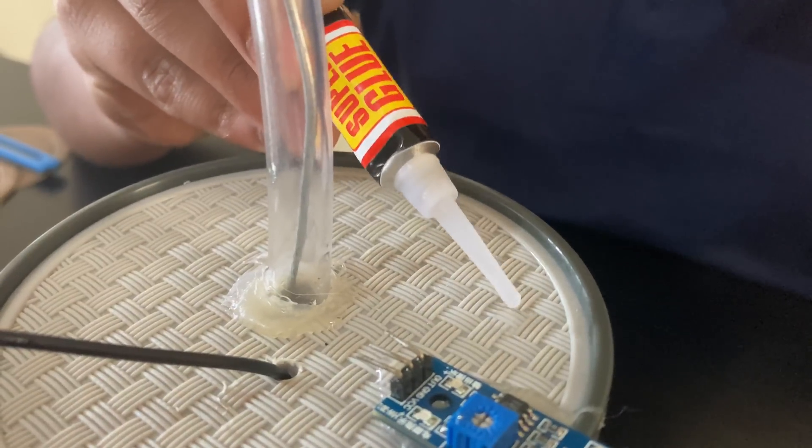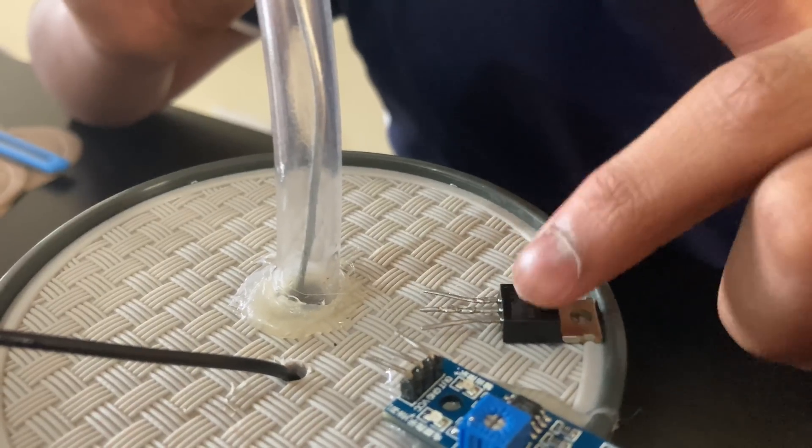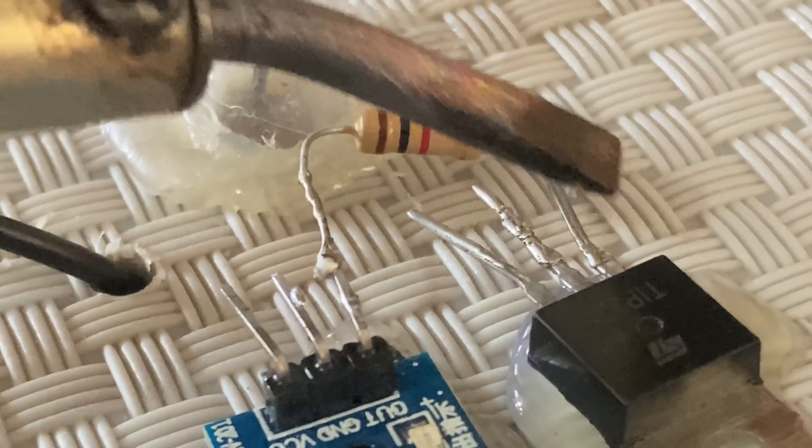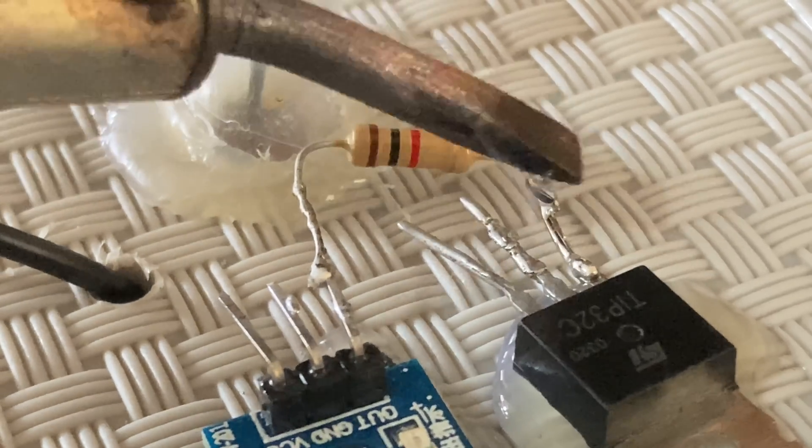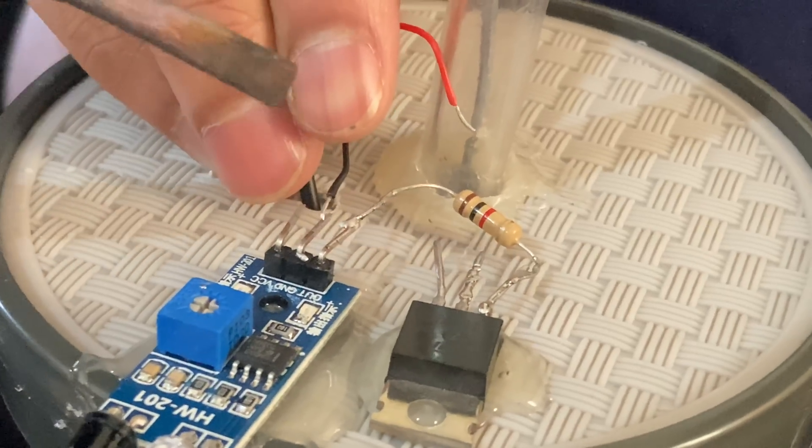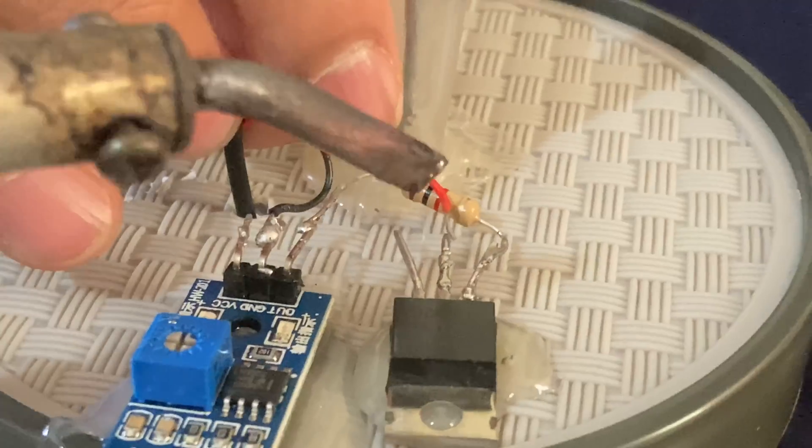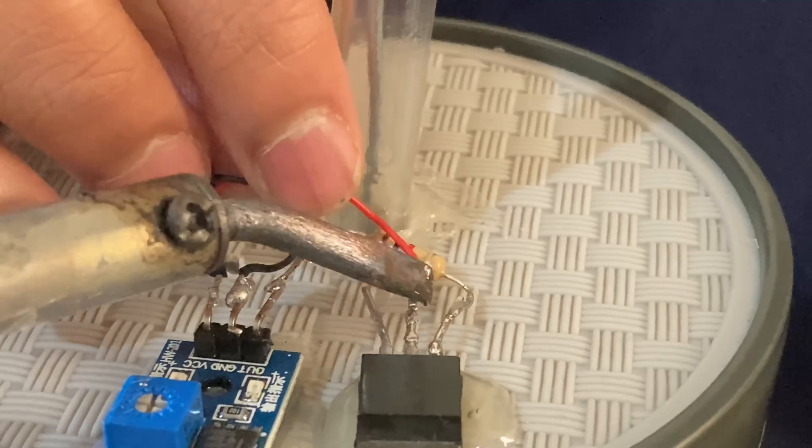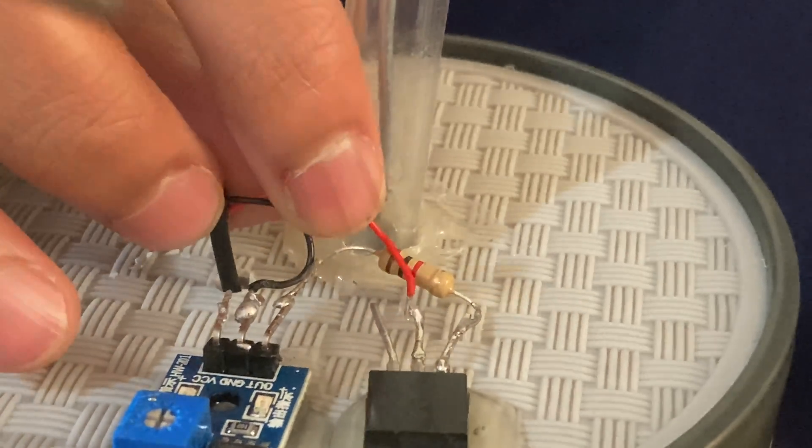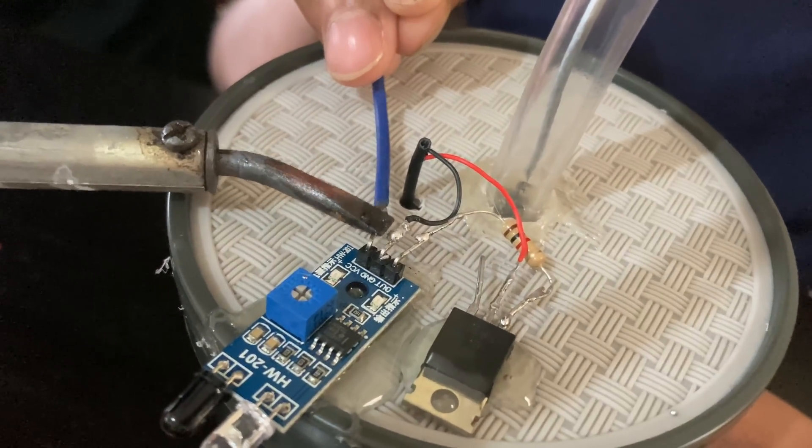So we will connect the 1k ohm resistor from the base to the out. Okay so we connect the black wire to the ground of the sensor and then we will connect the red wire to the collector of the transistor. Then you take a small wire and connect from the transistor's emitter to the VCC of the sensor.